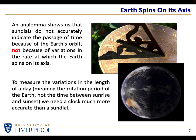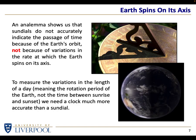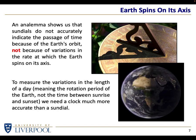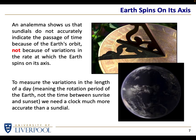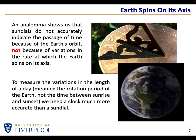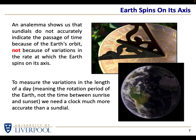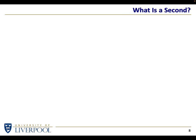So if we want to know how the Earth is actually turning, sundials are of no use — they're not accurate enough and they depend on the Earth's orbit, not simply the Earth's spin. If we want to measure how long a day is accurately — how long it takes the Earth to rotate once on its axis — we need something much more accurate than a sundial.